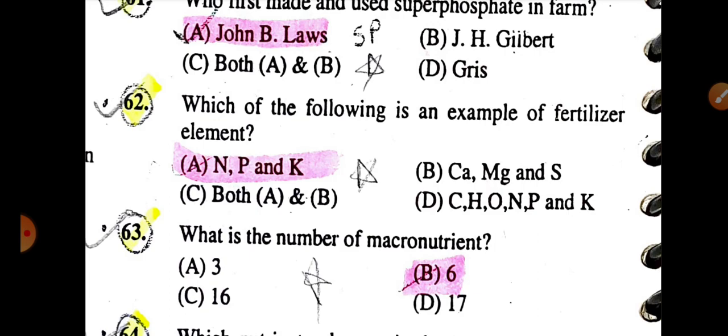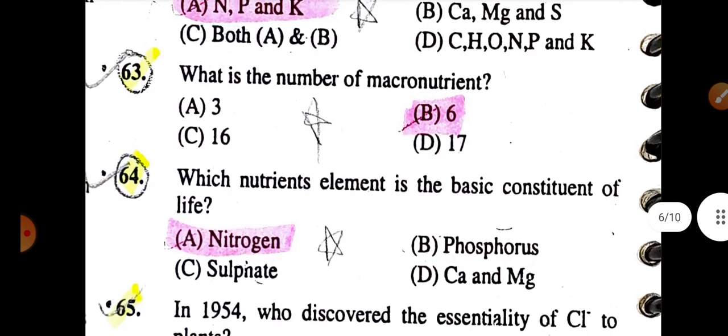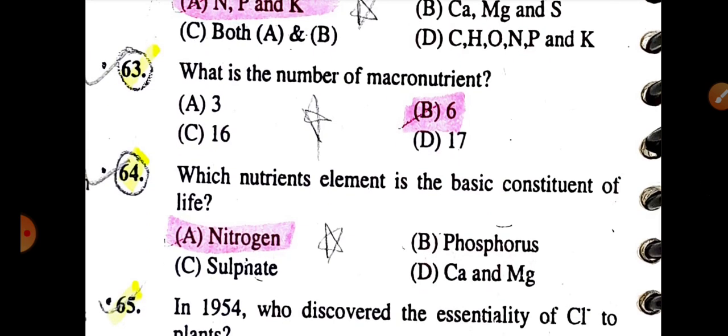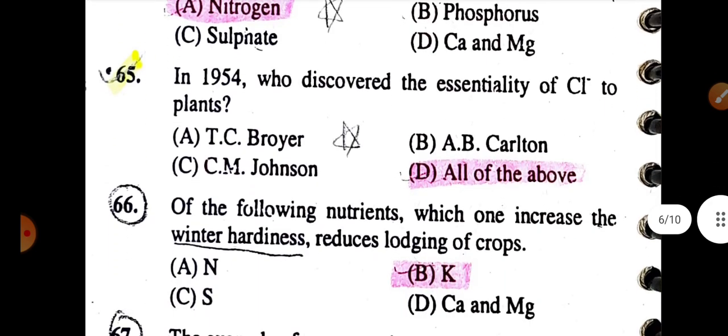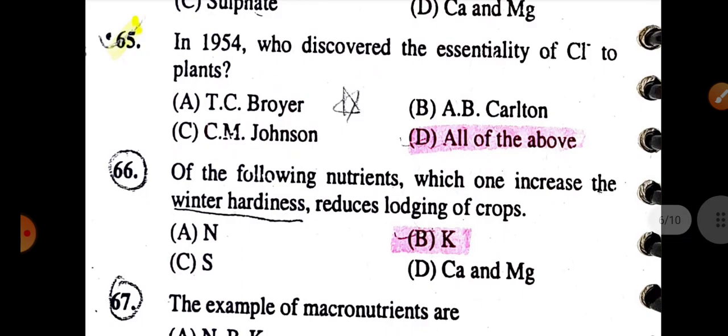Which of the following is an example of fertilizer element is NPK. What is the number of macronutrients is 6. Which nutrient element is basic constituent of life is nitrogen. In 1954, Wood discovered the essentiality of chloride in plants. Who discovered chlorine in plants: Broyer, Johnson and Carlton.